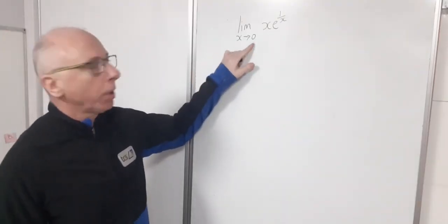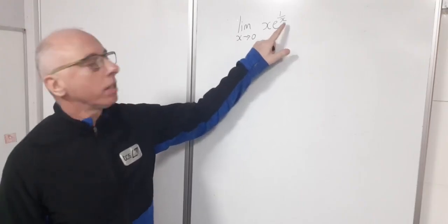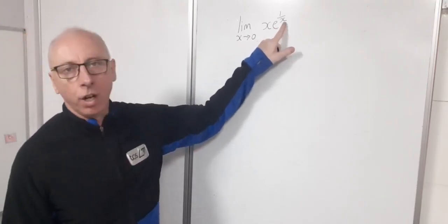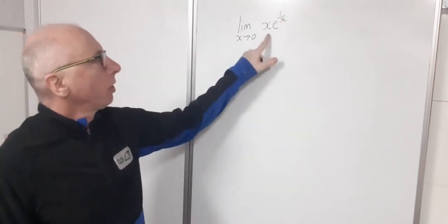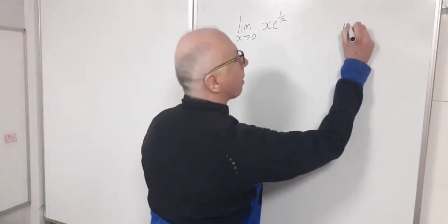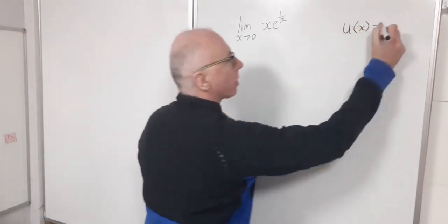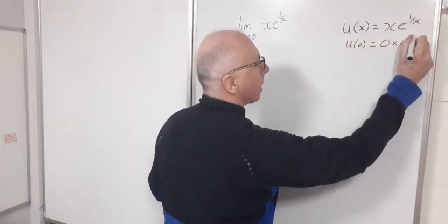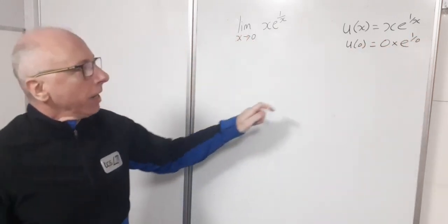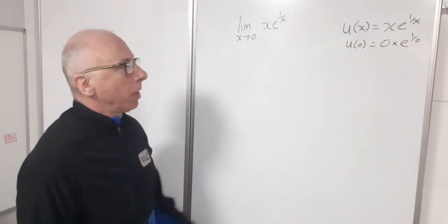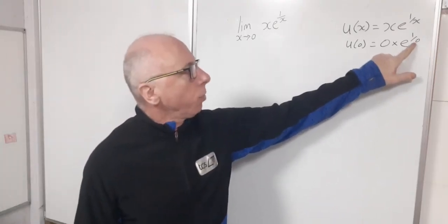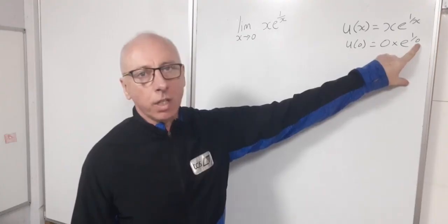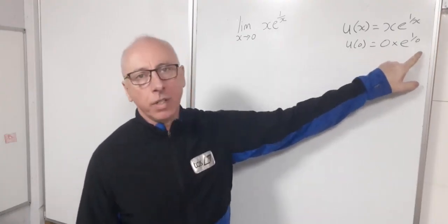In this video we're going to find the limit as x approaches 0 of x times e to the 1 over x. Straight away we can see that plugging in 0 gives us a 1 over 0 situation. Let's let this equal u of x, so u of x equals x·e^(1/x), meaning u(0) equals 0 times e^(1/0). Since 1/0 approaches infinity and e to the infinity is also infinity, we've got a 0 times infinity situation.